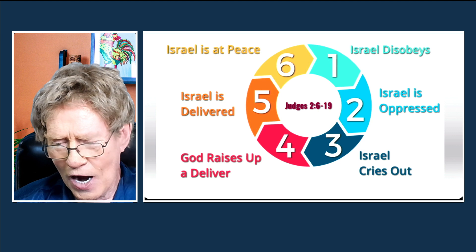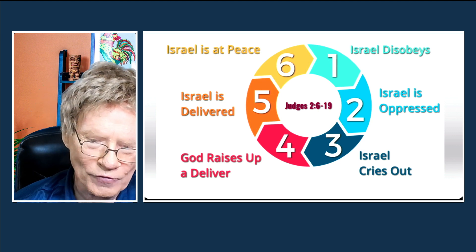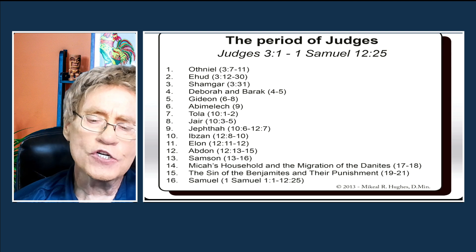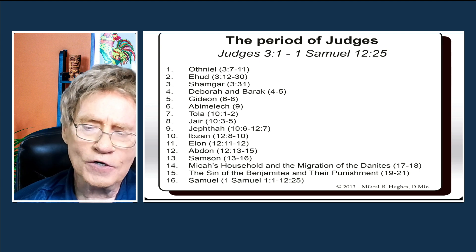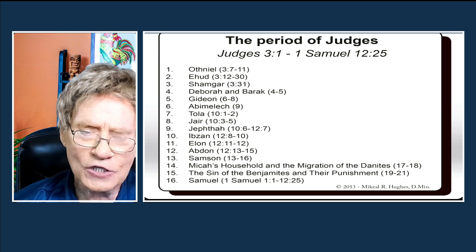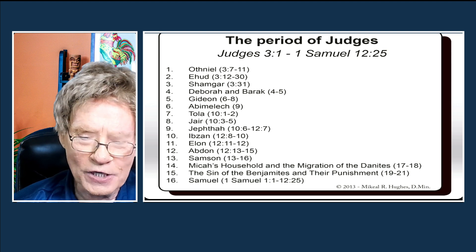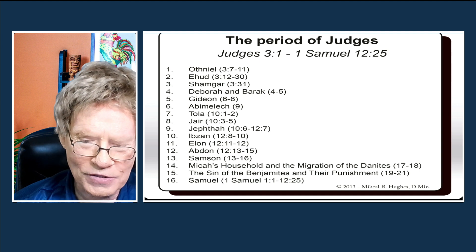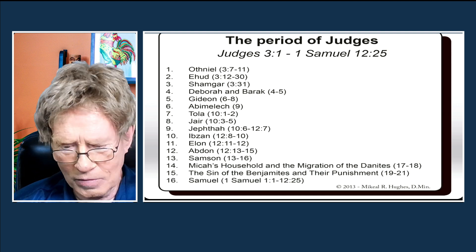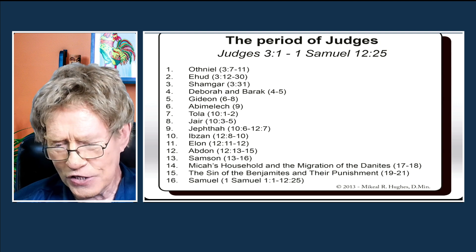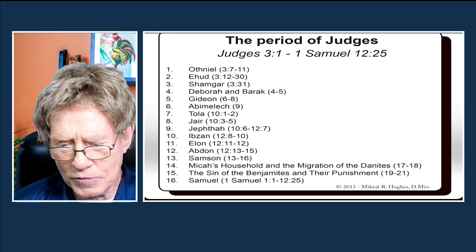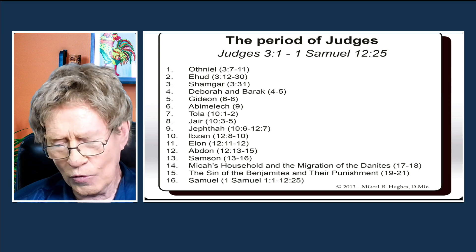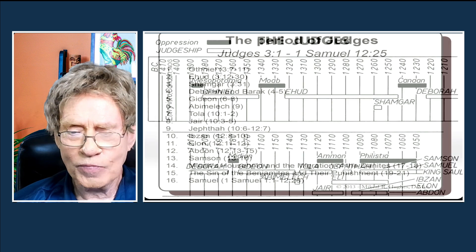The judges include Othniel, Ehud, Shamgar, Deborah, Barak, Gideon, Abimelech, Tola, and Jair — that's what we'll be up to — with eight more to follow: Jephthah, Ibzan, Elon, Abdon, Samson, then Micah's household and the migration of the Danites, the sin of the Benjamites and their punishment. Then we'll start Samuel with the Judge Samuel and the judgeship of Samuel. Some judges are major and some are minor, judging for shorter periods.